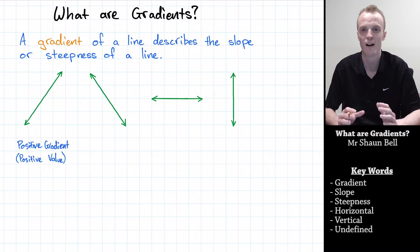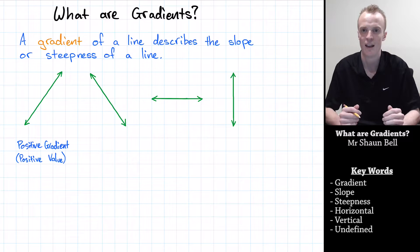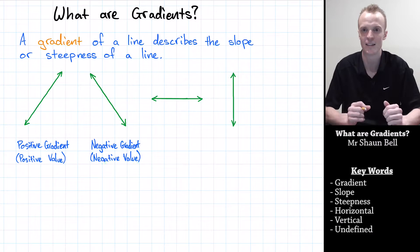But if we read a line left to right, like the second one here, and it's going downhill, we refer to downhill being a negative gradient, and we give that gradient a negative value.